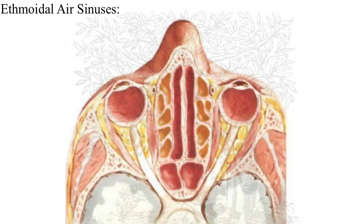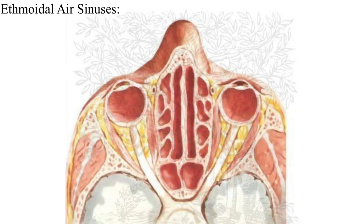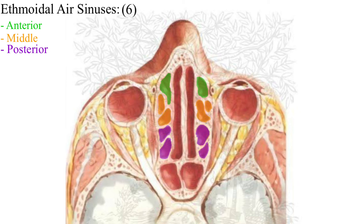The ethmoidal air sinuses are present between the lateral and the medial wall of the labyrinth of the ethmoid bone, and these are three in number: the anterior, middle, and posterior ethmoidal air sinuses. In each labyrinth, the three ethmoidal air sinuses — anterior, middle, and posterior — are present. So a total of six ethmoidal air sinuses are present in the ethmoid bone.